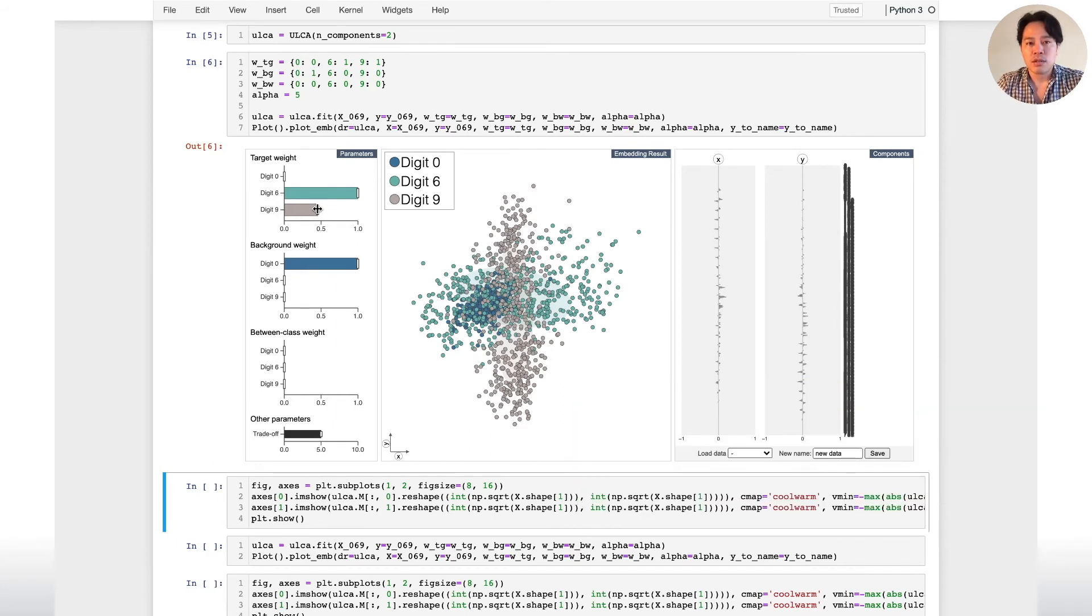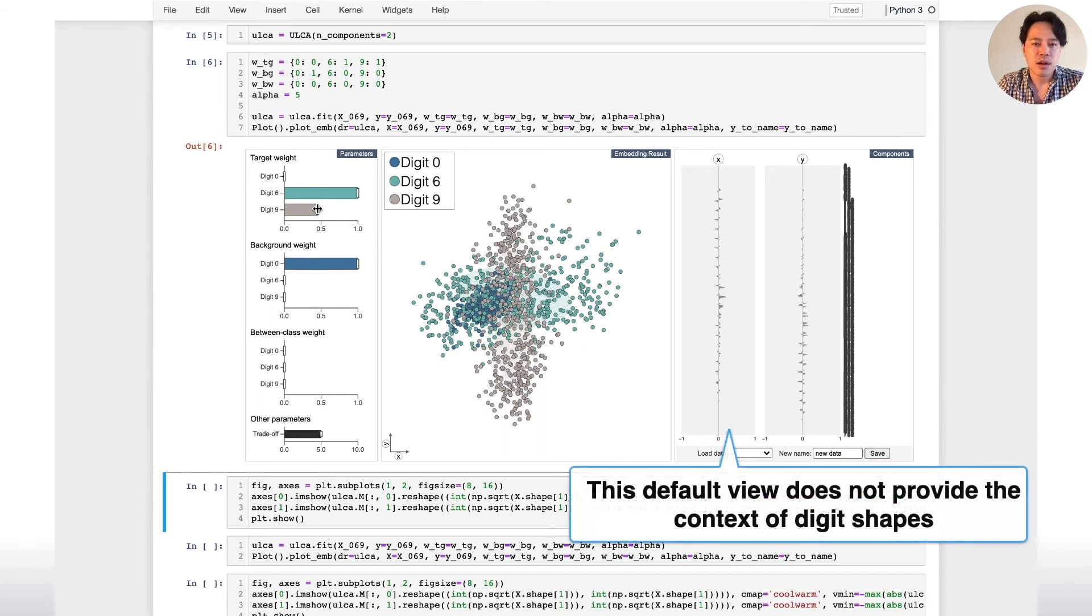From here, we want to know which structure has high influence on the result. However, the default view is not suitable to see the axis information in the context of digit shapes.